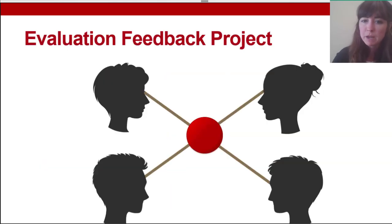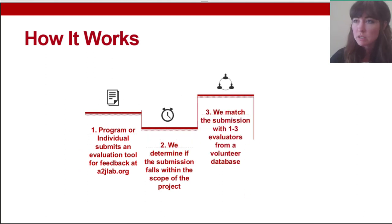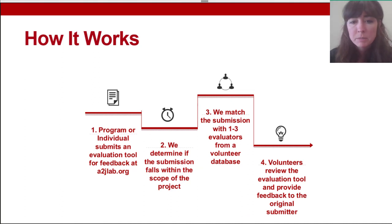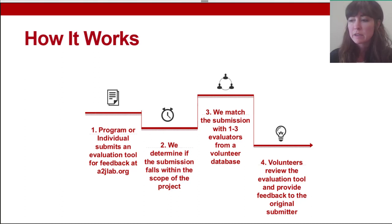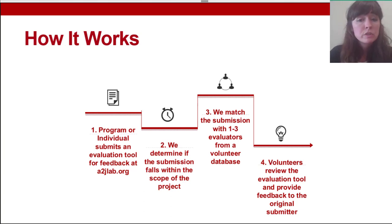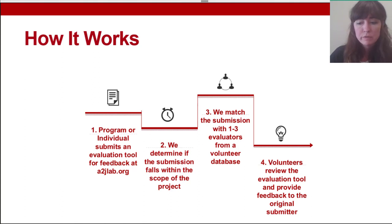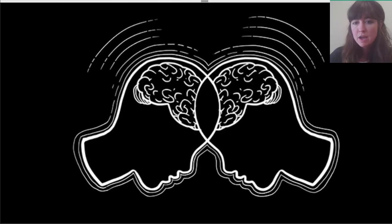Regarding the evaluation feedback project: it's on the A2J Lab web page under resources. You submit an evaluation tool using a submission button, upload your tool, and fill out a form telling us a little about it. If it falls within the scope of our project — which tends to be smaller things like client surveys, since we're asking evaluators to donate their time — we match your submission with one to three evaluators who return feedback in a couple of months on how to improve your tool.